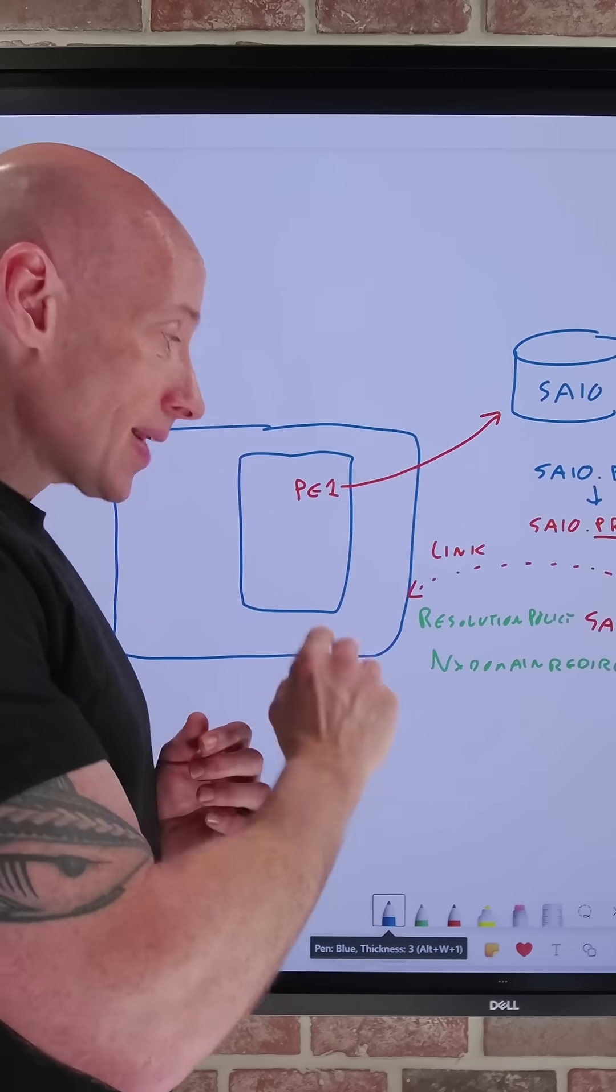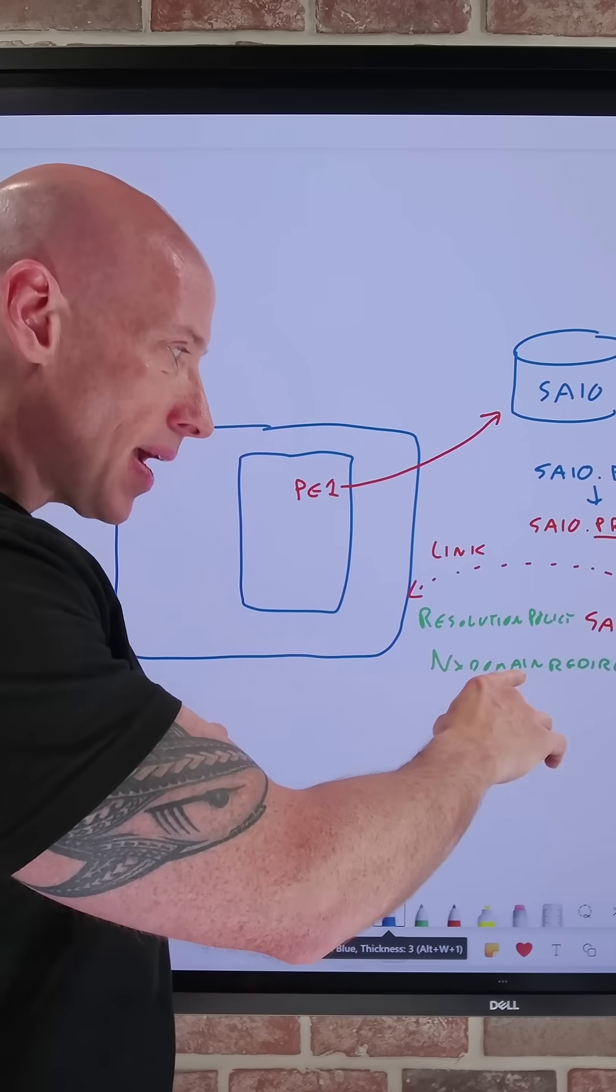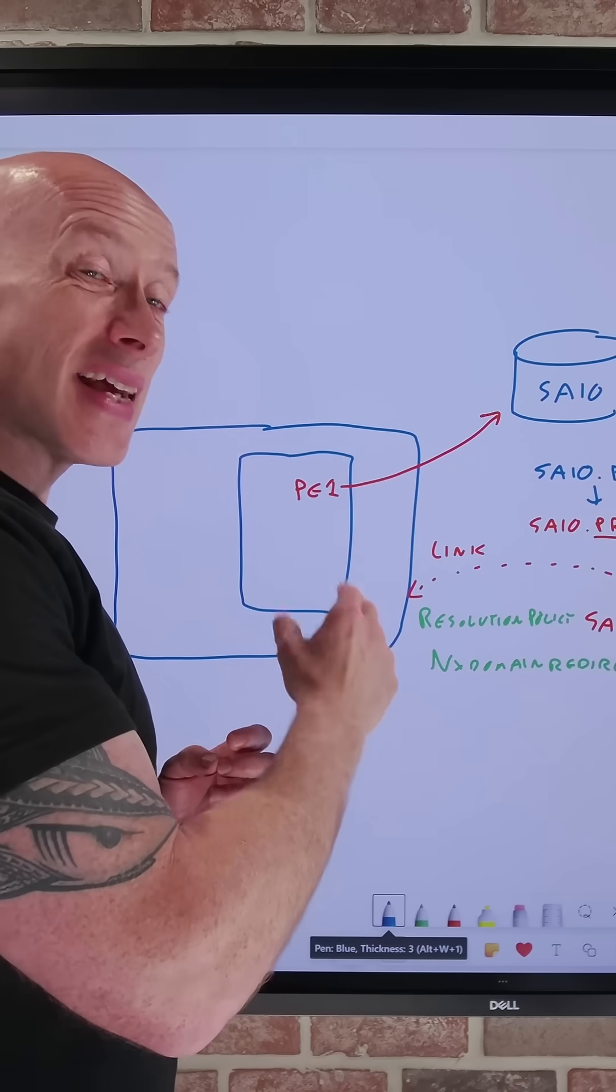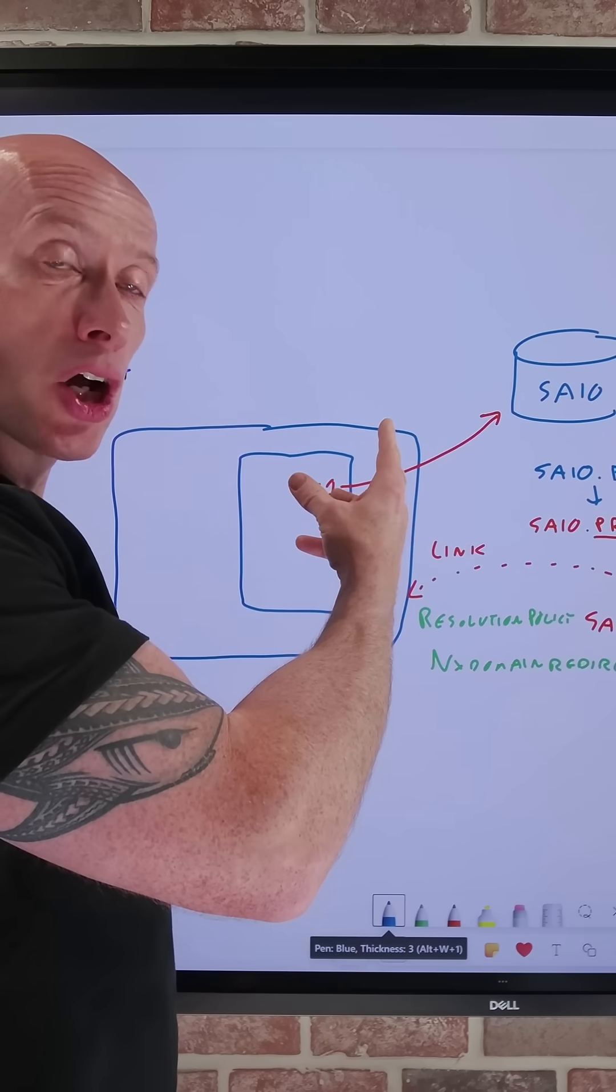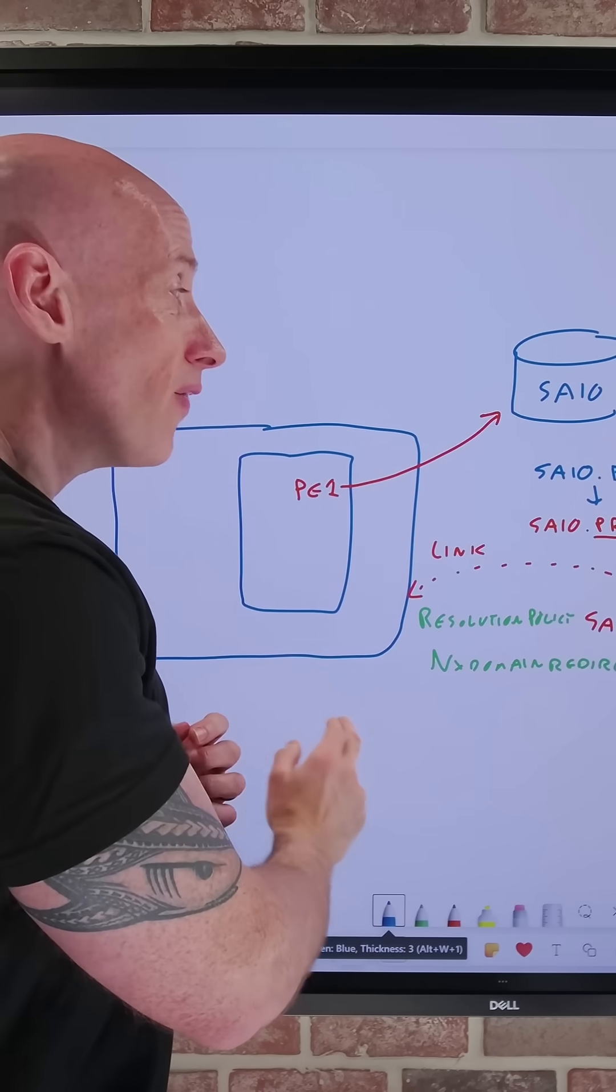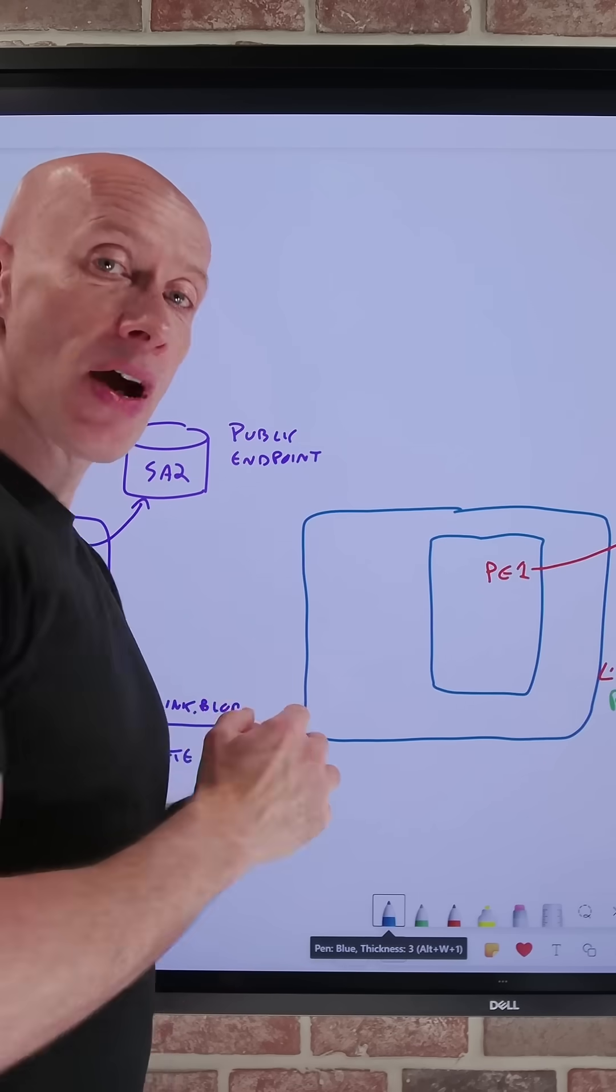So what internet fallback does is I now have an NX domain redirect policy that says, hey, if you can't find the record, go and use the public DNS recursion. It would then work and find a match, and I can access it by the public endpoint.